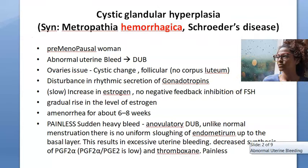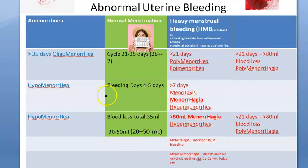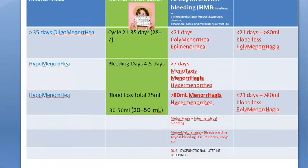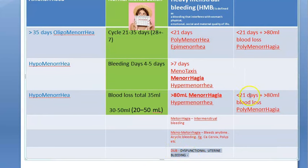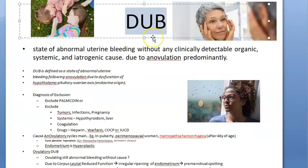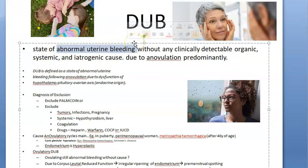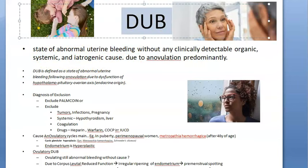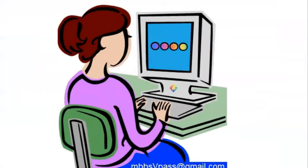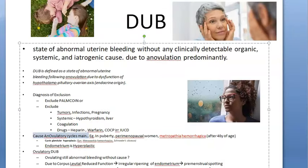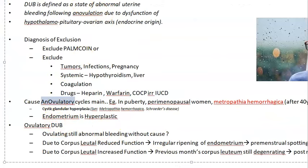If you have seen the abnormal uterine bleeding video, there are many terminologies. Under abnormal uterine bleeding (AUB), you have Dysfunctional Uterine Bleeding (DUB). DUB means AUB where you could not detect any abnormality — no organic, systemic, or iatrogenic cause. So there is some abnormal bleeding in these people; it is dysfunctional uterine bleeding under abnormal uterine bleeding.